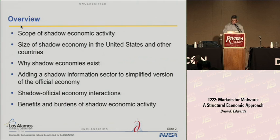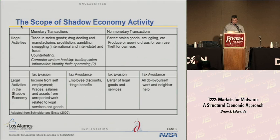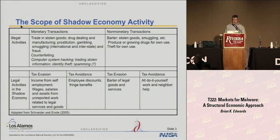This is a table adapted from a Journal of Economic Literature review article that you can get on the web. It's kind of a taxonomy of shadow economic activity. A lot of the shadow economic activity that people talk about is the usual suspects — gambling, prostitution, illegal drugs, trade in stolen goods, and so forth.